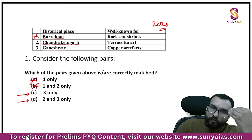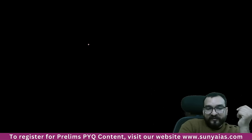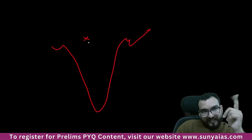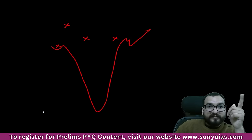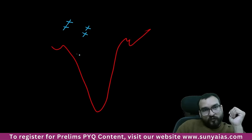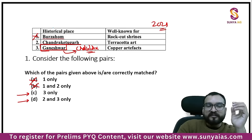Looking at the answer — the first option is wrong, so B and D are wrong. You are left with A and C. Chandraketu Garh you might not have heard; Ganeshwar you can see in the Chalcolithic period — this is one of your Chalcolithic sites. The Chalcolithic sites include Gilund, Ahar, Malwa, Kayatha, Daimabad, Navdatoli, and add Ganeshwar too. The Neolithic sites are Burzahom, Gufkral, Chirand, Daojali Hading, Hensgi, Paiyampalli, and Peklihal. Burzahom is mentioned in the sixth class NCERT. You have to memorize all these sites and add information that comes up through PYQs.